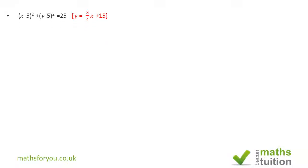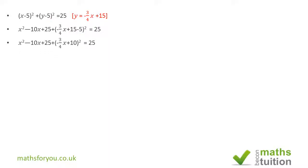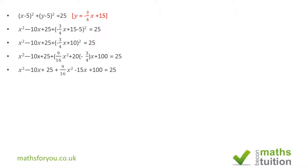Now confirming by substitution: substitute the value of y from the line into the equation of the smaller circle. The line rearranged gives y = −(3/4)x + 15, so y − 5 = −(3/4)x + 10. Expanding the brackets gives 9/16 x² − (3/4)(20)x + 100, where the 20 comes from 2 × 10 × (−3/4)x. Then 15x comes from −5 × (−3).